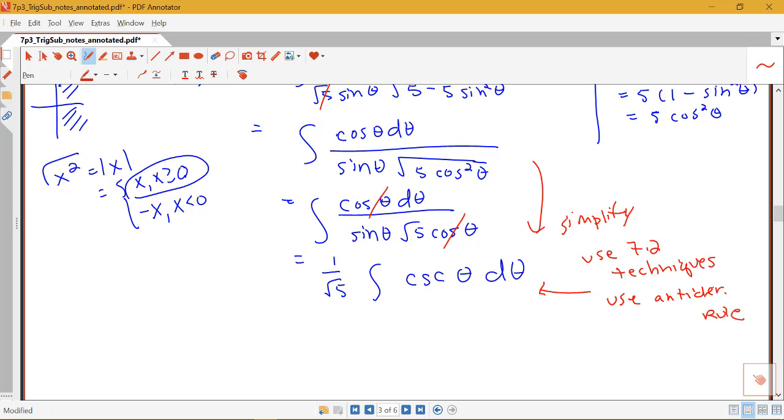We learned two new rules back in 7.2, the integral of secant and the integral of cosecant. So the integral of cosecant was one that had a log in it. So we have 1 over root 5 log was the absolute value of cosecant theta minus cotangent theta plus c.